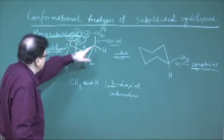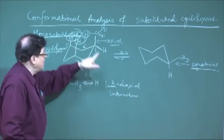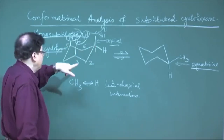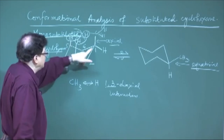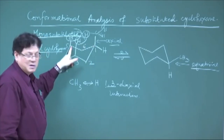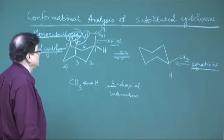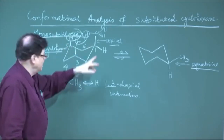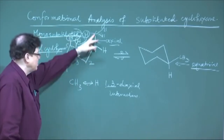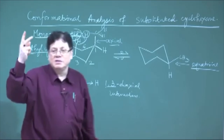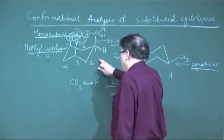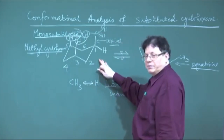It is 1,3 in both cases — the relationship between these two carbons is 1,3. Do not call it a 1,5-diaxial interaction; it is always 1,3. So there are two 1,3-diaxial interactions present in the axial conformer of methylcyclohexane. We always draw the chair form because it is the most stable conformer and the one that is actually present; we are not considering the boat or twist-boat form here.